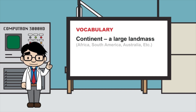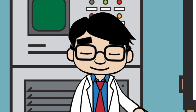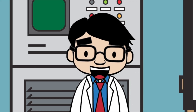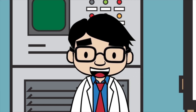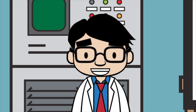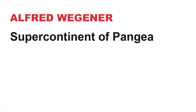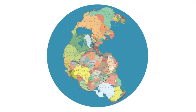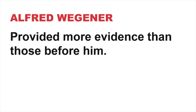You can't talk about continental drift without talking about Alfred Wegener, who developed the theory of continental drift and the previous existence of a supercontinent called Pangea. The idea that the continents were once together was not new, but Alfred Wegener provided more evidence than those before him.